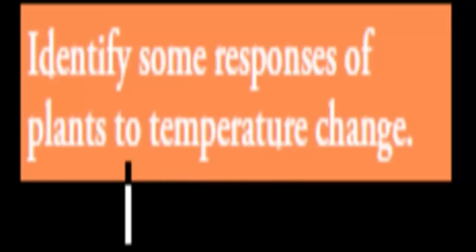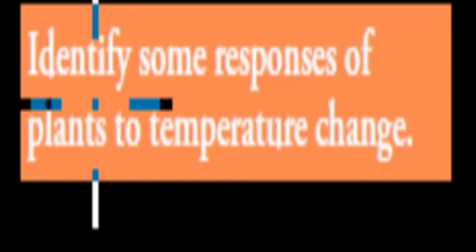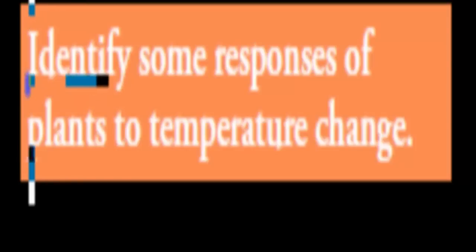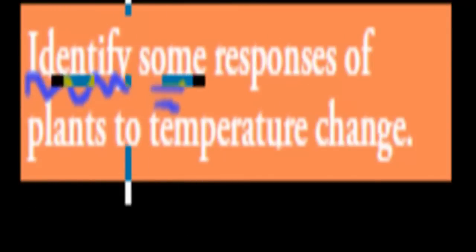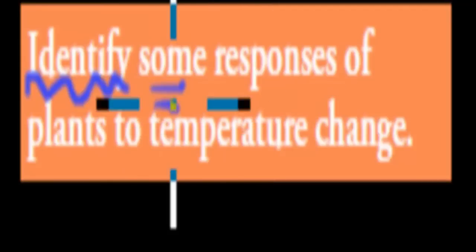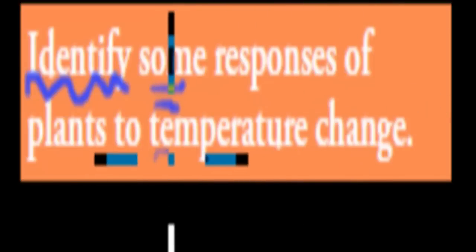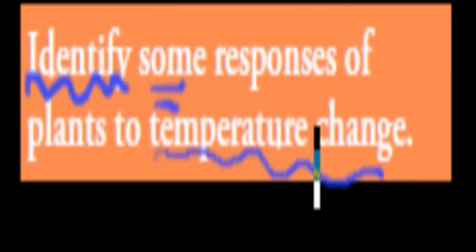Welcome back. In the last video we talked about some of the temperature adaptations that different Australian endotherms and ectotherms have. In this video we're going to cover plants and animals. The dot point says: identify some responses of plants to temperature change. 'Identify' means we just have to name them, and 'some' means we need to know more than one.